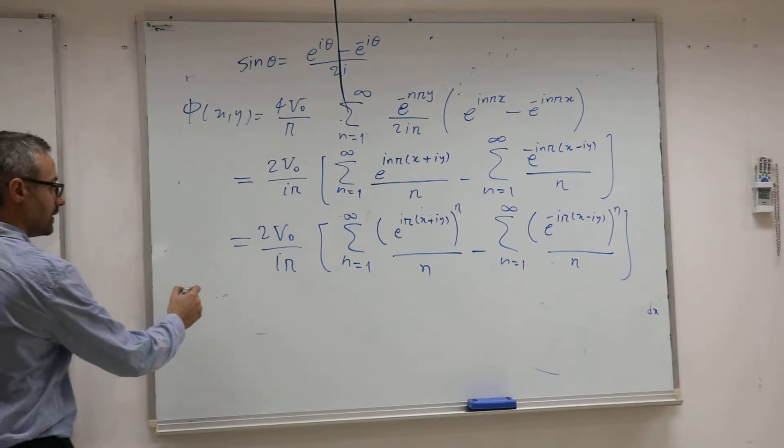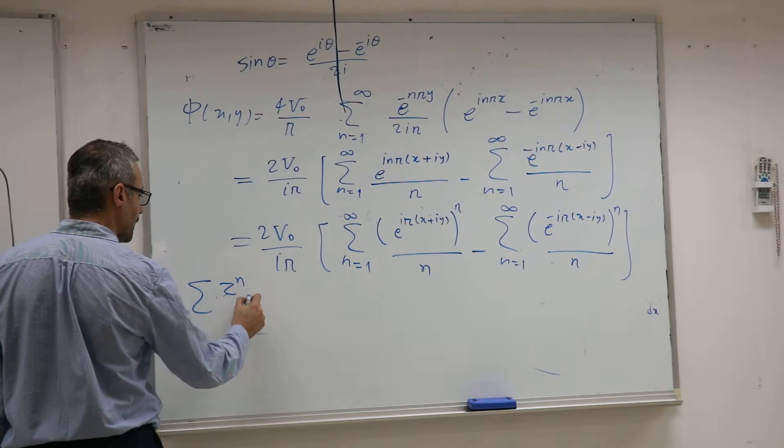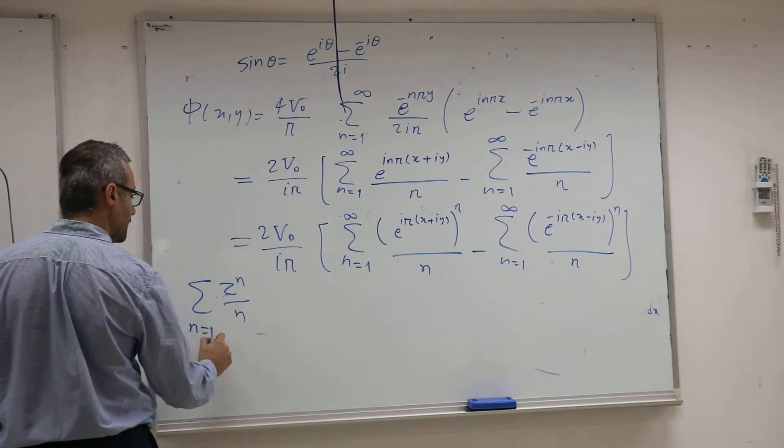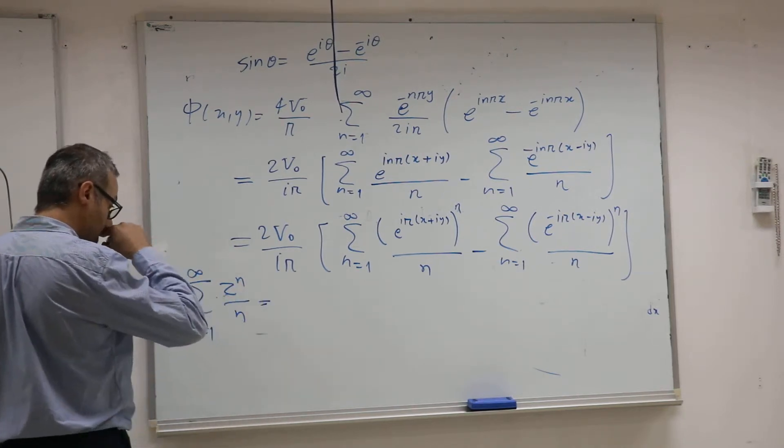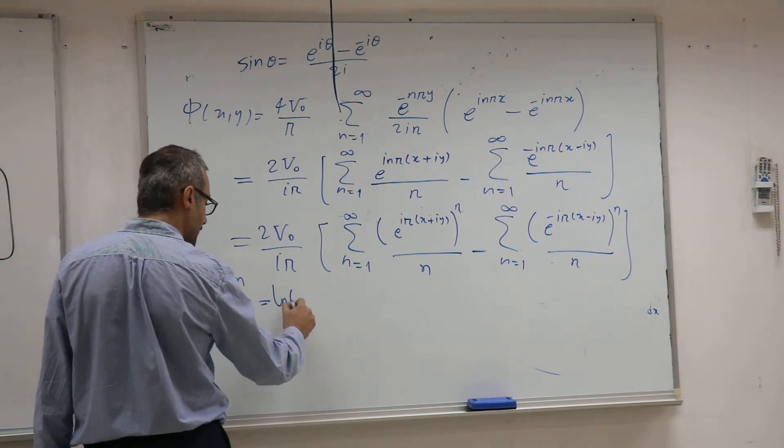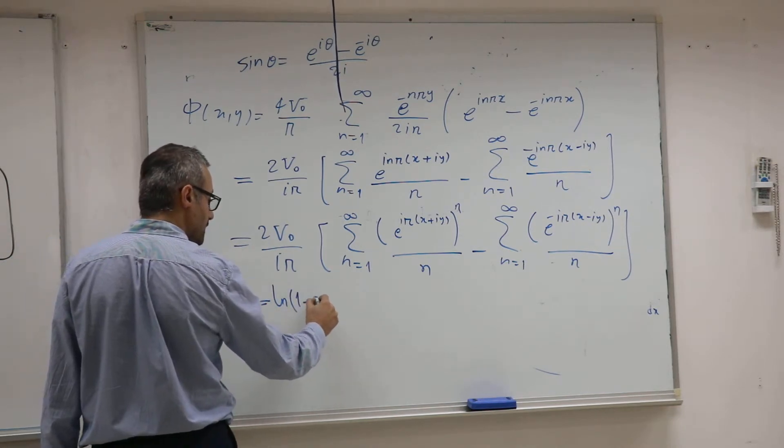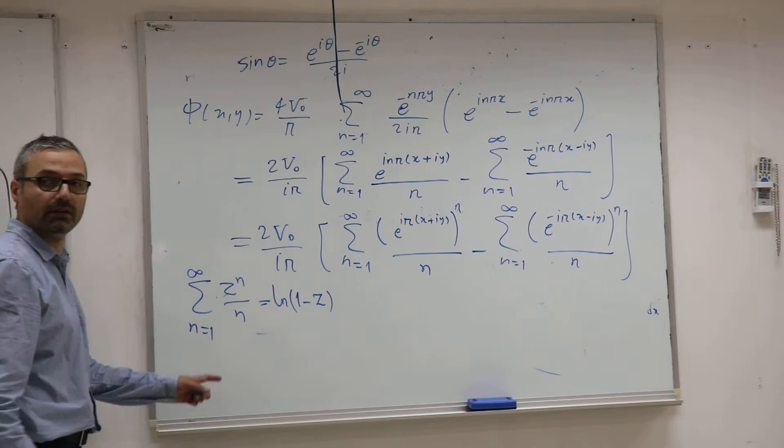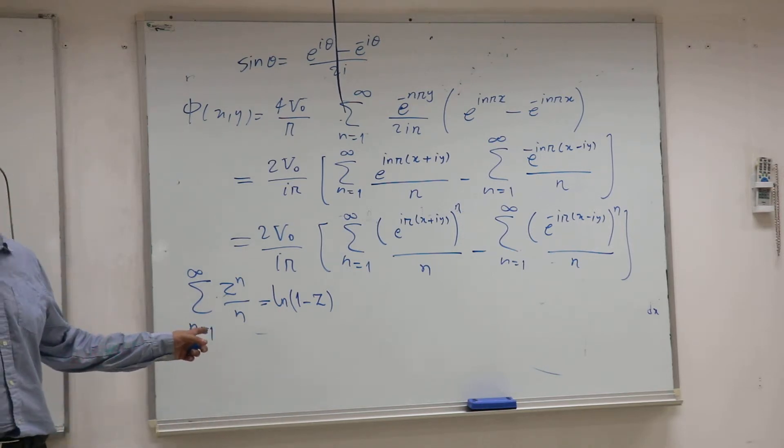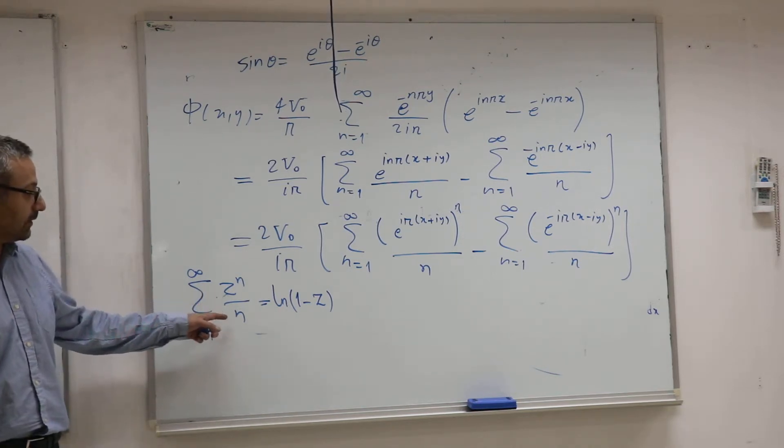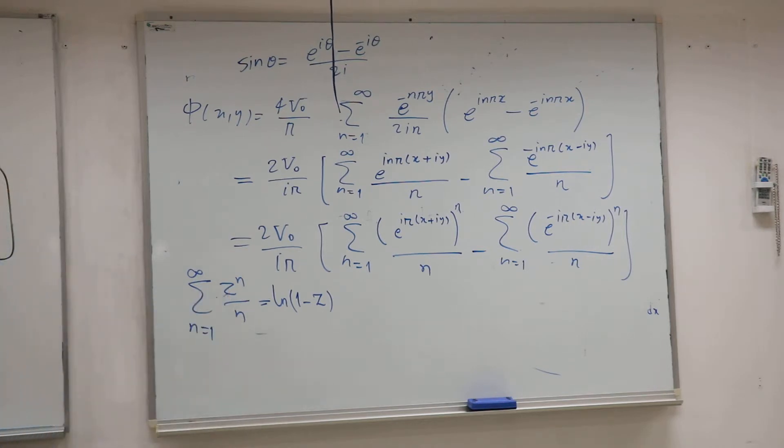You need this information: sigma Z^N over N, when N starts from one. What will this be? You know, it will be ln(1-Z). You can go back to the calculus book. Sigma Z^N over N is ln(1-Z).